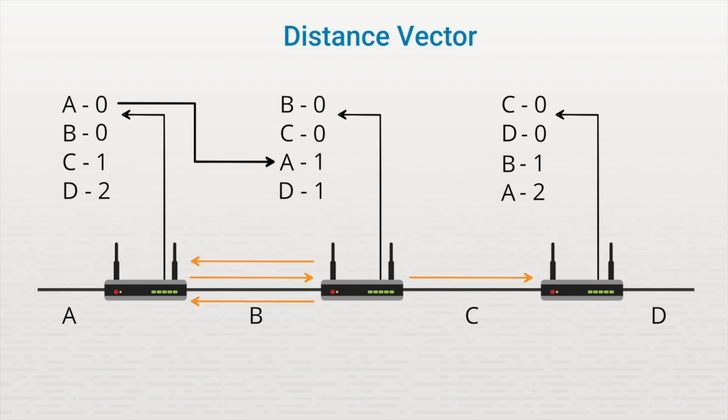A key characteristic of the distance vector method is that every router shares its entire routing table with its neighbors at every update interval.